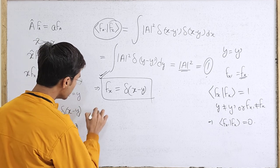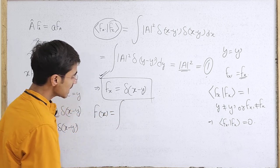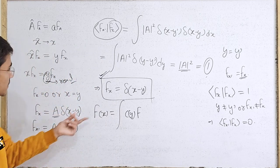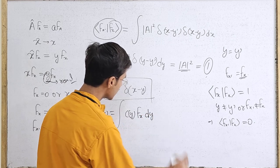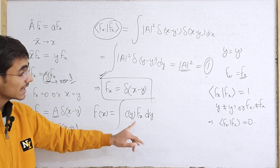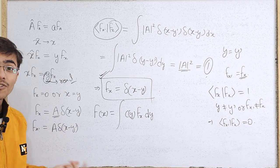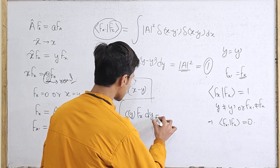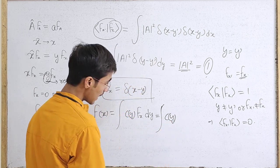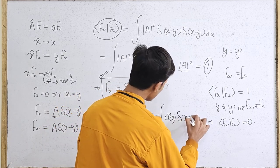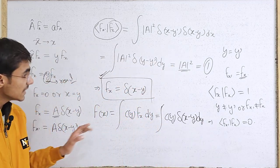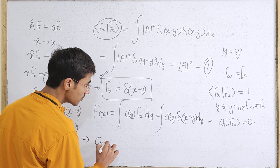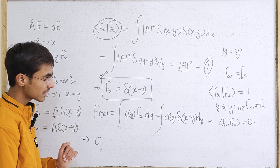You can basically consider an expansion: you have a particular function f(x) written as the integral of c(y) times the eigenfunction f_{x}, integrated over dy. Since the eigenfunction is a delta function of (x minus y), you can write this as the integral of c(y) · delta(x minus y) dy. This represents any function f(x) expressed in terms of these eigenfunctions.